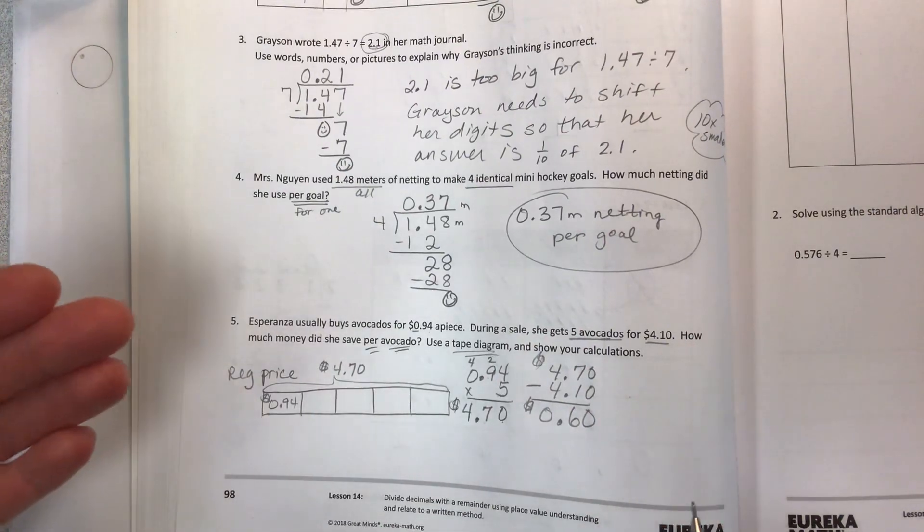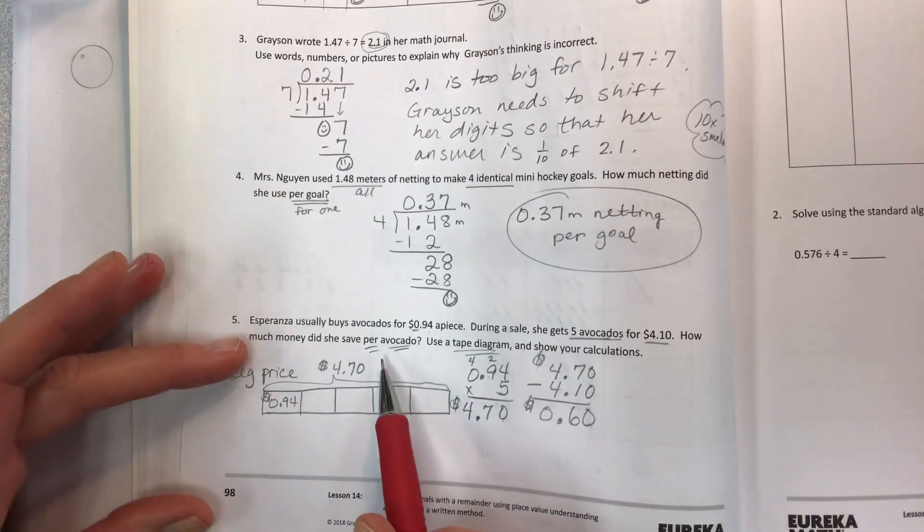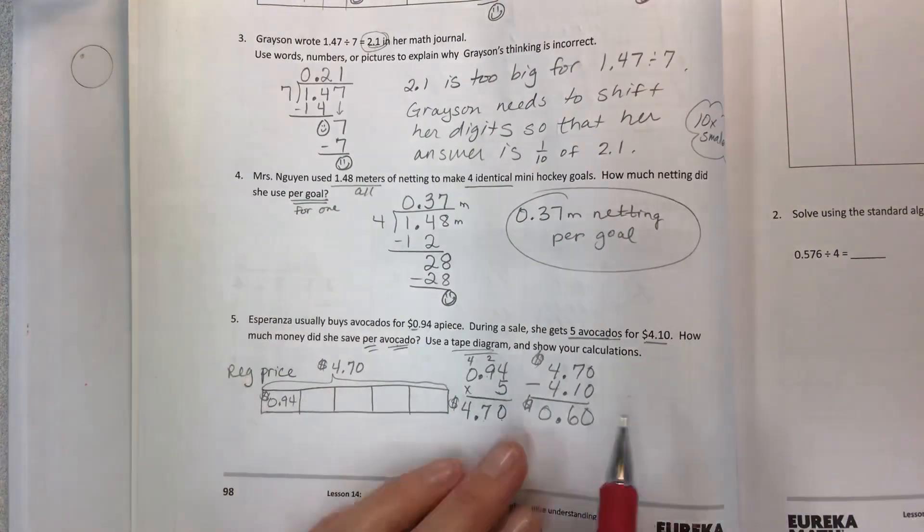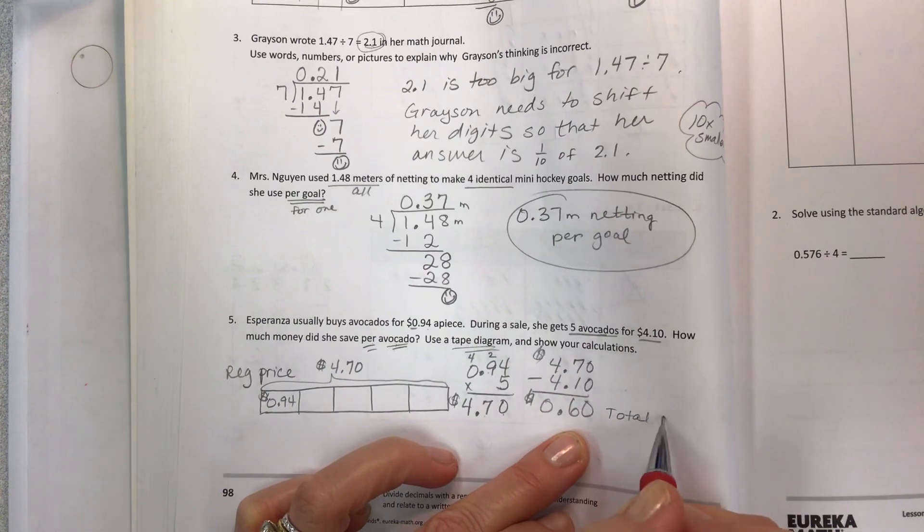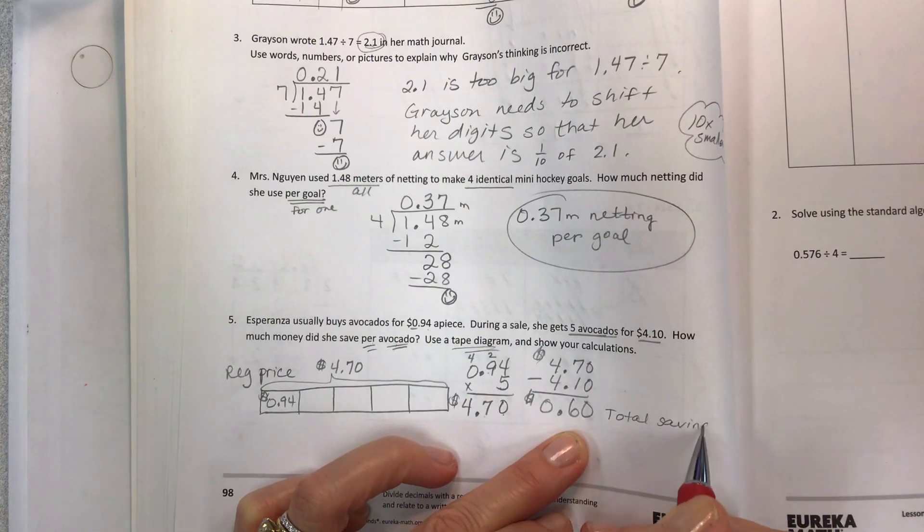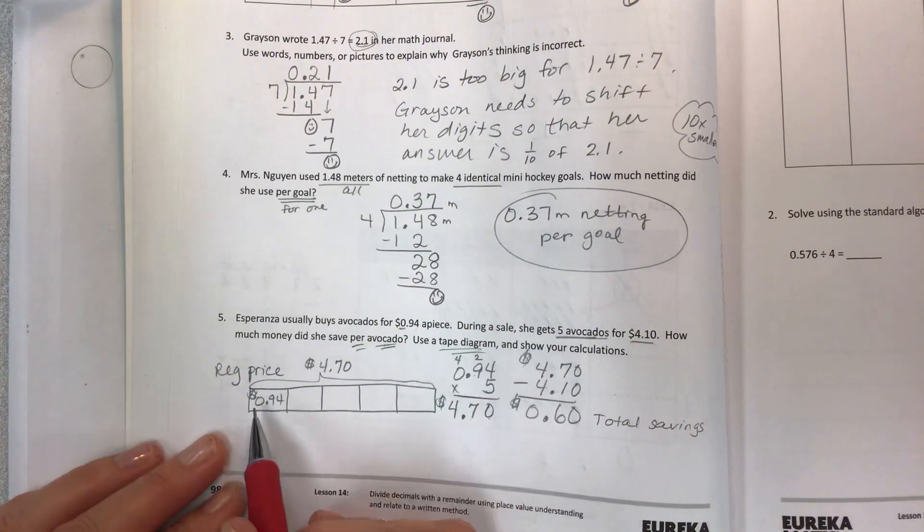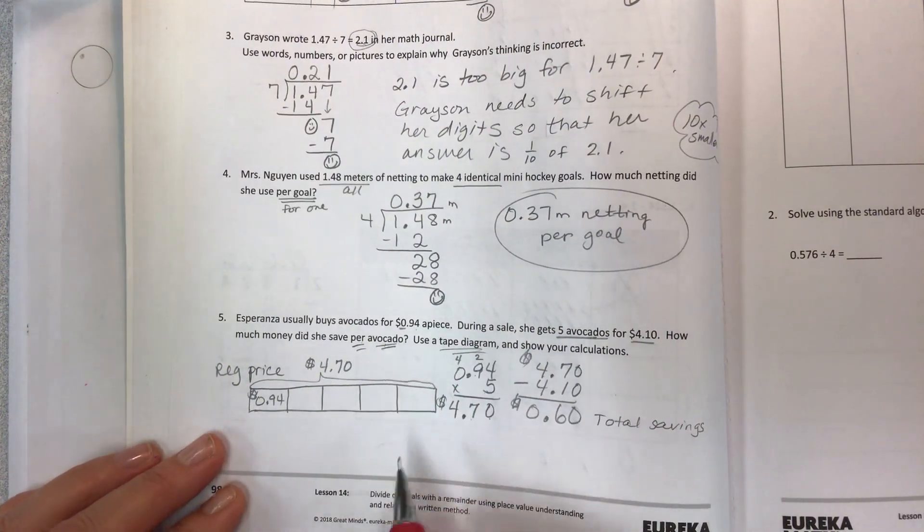Now that doesn't actually answer the question because there's more to it. It's saying per avocado. So this is the total savings, which we're almost done with it, but this is our total savings, but it's for five avocados.